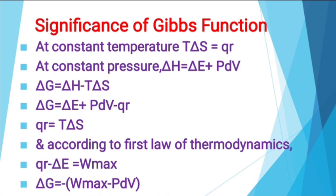Our first point of discussion is the significance of Gibbs' function. At constant temperature, we know the definition of delta S, which is equal to Q_R divided by T. So we can write the equation as T delta S is equal to Q_R. And at constant pressure, we know the definition of enthalpy: delta H is equal to delta U plus P dV, or delta H is equal to delta E plus P dV. Our definition of Gibbs' function is G is equal to H minus TS, and Gibbs free energy change is given by delta G is equal to delta H minus T delta S.